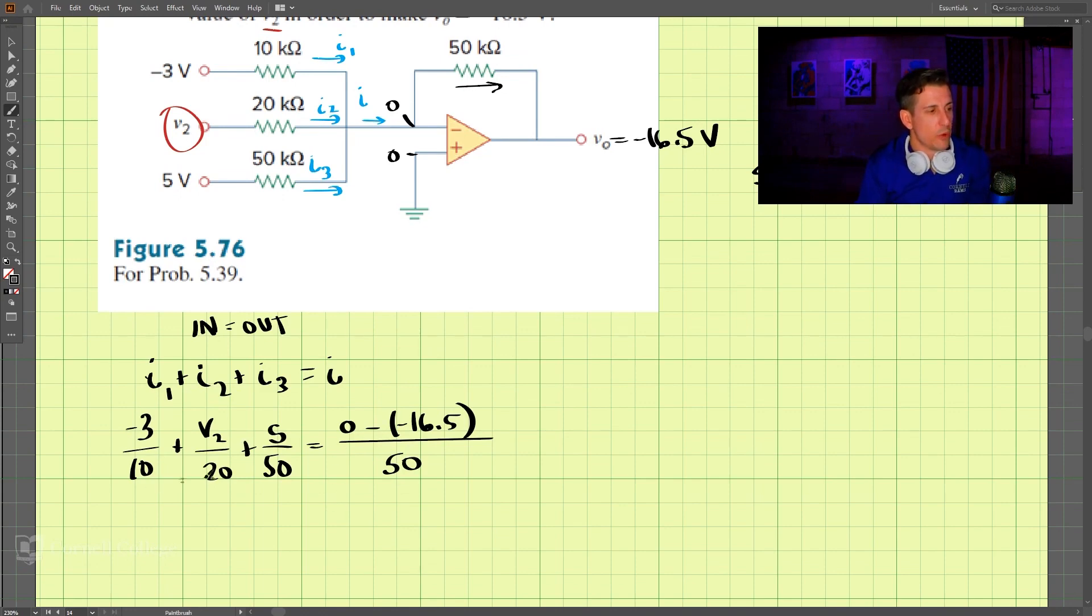So solving this equation, let's simplify. This right-hand side, negative 16.5 divided by 50, so that's 0.33. And that is equal to negative 0.3 plus V2 divided by 20 plus 5 over 50, should be one tenth, 0.1.